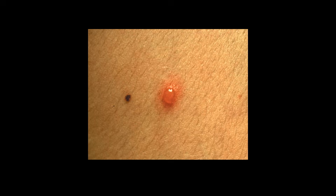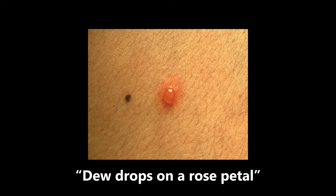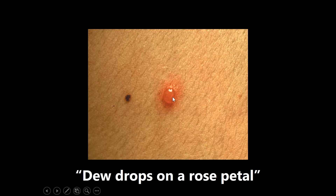This last image is an example of dew drops on a rose petal — a term I'd heard throughout medical school but never had a clear image of. This is what it looks like. More scientifically, it's described as a clear vesicle sitting on an erythematous base. The two primary viruses associated with this finding are varicella zoster and herpes simplex.